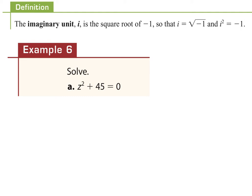We've assigned the letter i to represent the square root of negative one so that you can move forward with certain problems when you get a negative in the root. This is called the imaginary unit i. There are going to be times when you solve these and you have a negative in your root. Anytime you have a negative in the root, your answer is going to contain an i — because the way you get the negative out of the root is to multiply by negative one inside the root, which takes it out with an i.